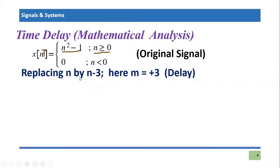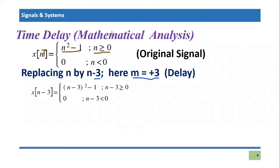I'm going to delay this signal by replacing n with n-3. The value of m here is positive three, which means we will have a delayed version of the signal. Wherever we see n, it will be replaced by n-3, so we get x(n-3) = (n-3)²-1 for the appropriate interval, which simplifies by expanding (n-3)².